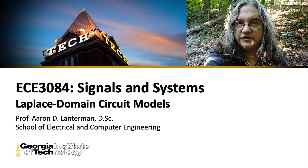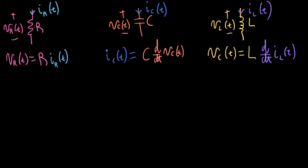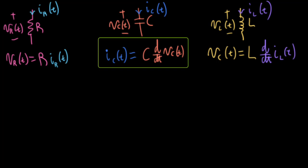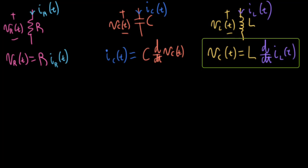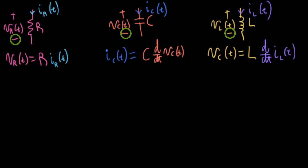Here I've written down the standard time domain relations for resistors, capacitors, and inductors. The relationship between voltage and current for the resistor is just multiplication by a constant given by Ohm's law. The current through a capacitor is the capacitance times the derivative of the voltage, and for the inductor, which is something of a dual of the capacitor, the voltage is equal to the inductance times the derivative of the current.